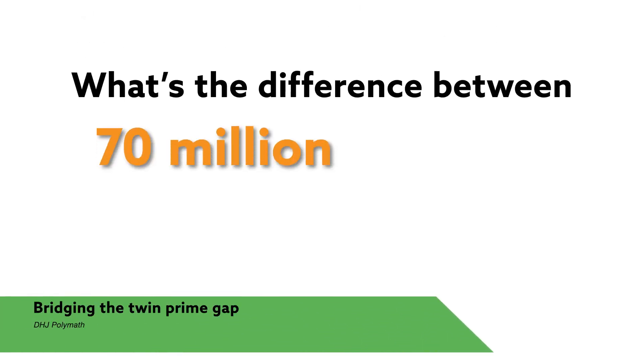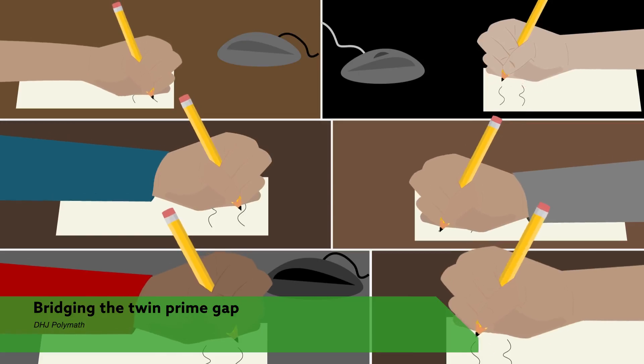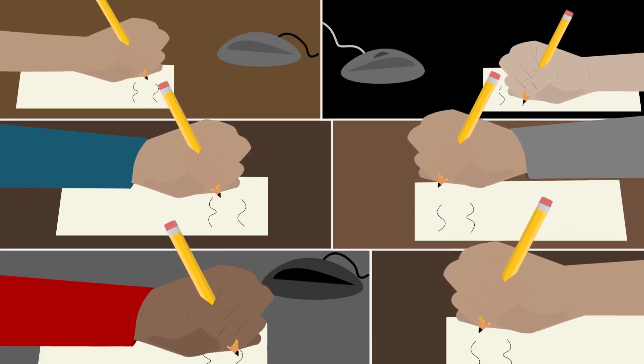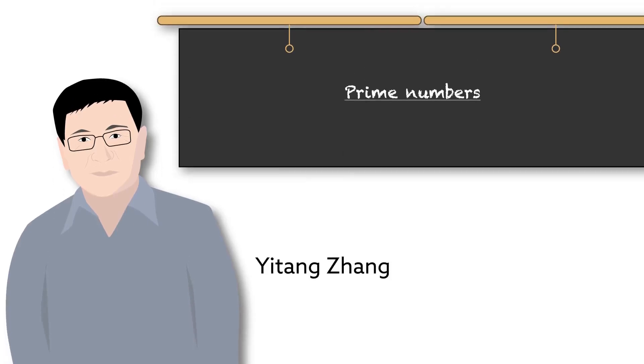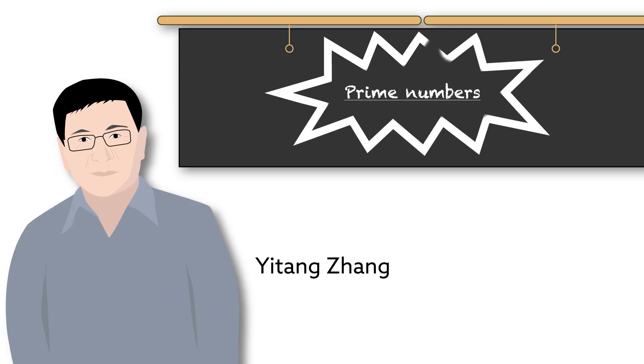What's the difference between 70 million and 246? For a team of mathematicians, the difference is more than just a number. It's the story of how a relatively unknown researcher cracked an impenetrable math problem, setting off a mad dash to set a new record in the timeless study of prime numbers.